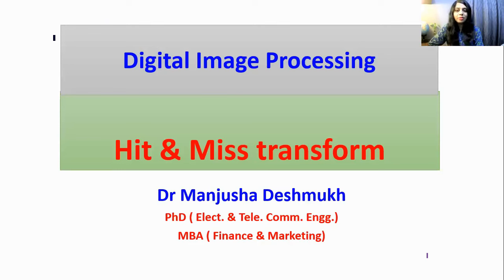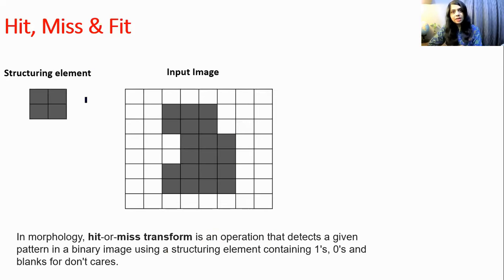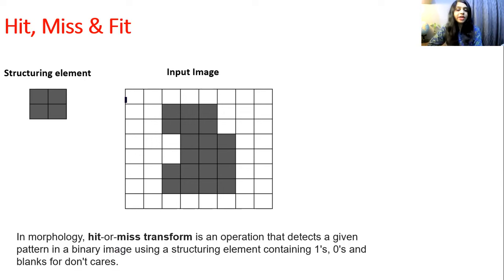Hello everyone. In this video I am going to explain hit and miss transform of digital image processing. Let's understand what hit or miss transform is. In morphology, hit or miss transform is an operation that detects a given pattern in a binary image using a structuring element.